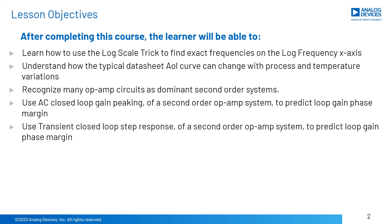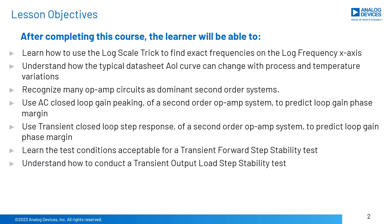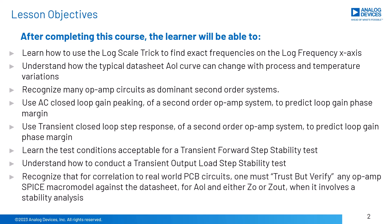Use transient closed-loop step response of a second-order op-amp system to predict loop gain phase margin. Learn the test conditions acceptable for a transient forward step stability test. Understand how to conduct a transient output load step stability test. Recognize that for correlation to real-world PCB circuits, one must trust but verify any op-amp SPICE macro model against the datasheet for AOL and either ZO or ZOUT when it involves a stability analysis.